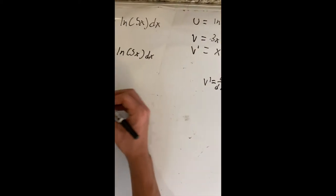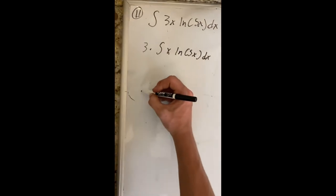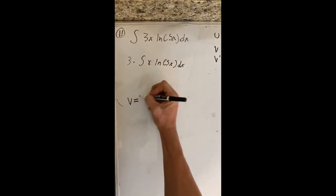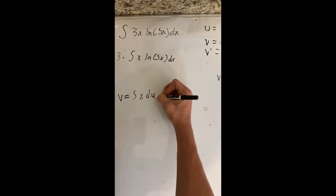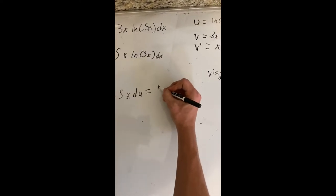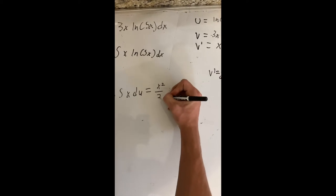And then for v... I'm going to put this back over here. For v... V is going to be the integral of x dx. And that's going to equal x squared divided by 2.